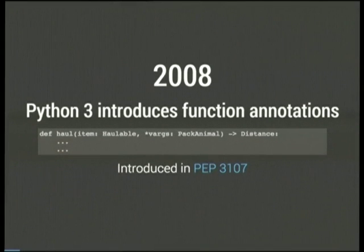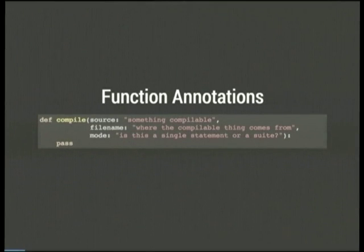When Python 3 came around, they introduced function annotations. You specify annotations to arguments by putting a colon after the argument and putting something after it, and return annotations by putting an arrow at the end of your argument list. These were introduced as part of the Python 3 spec and landed in Python 3.0. They were flexible enough that you could use them for things like auto-generating documentation from string annotations for each argument and return value — you could put anything inside them.